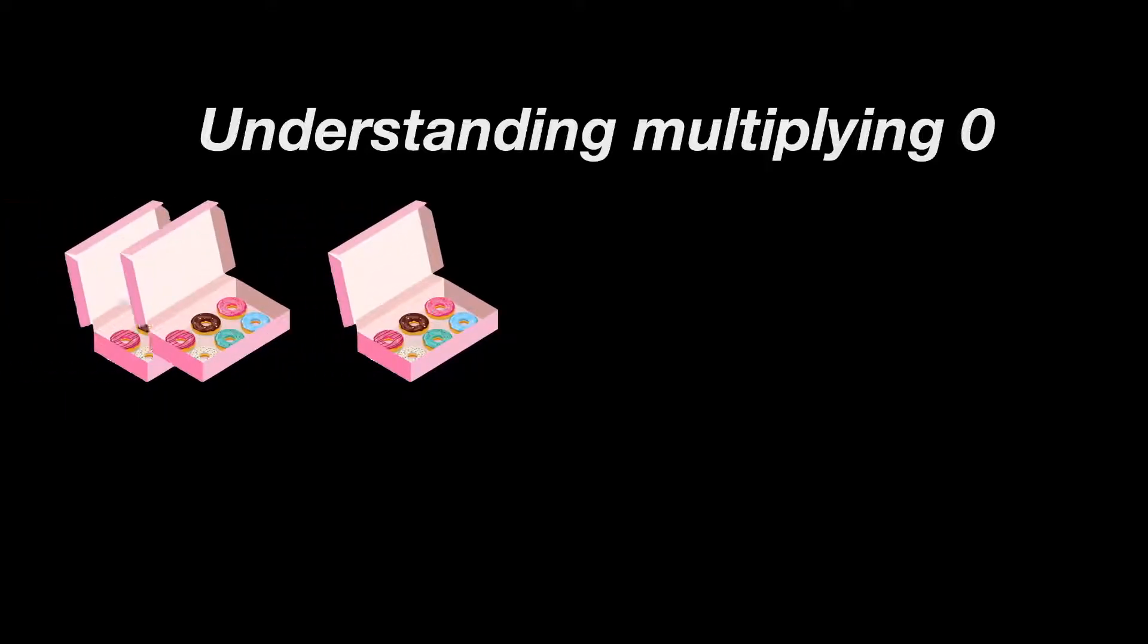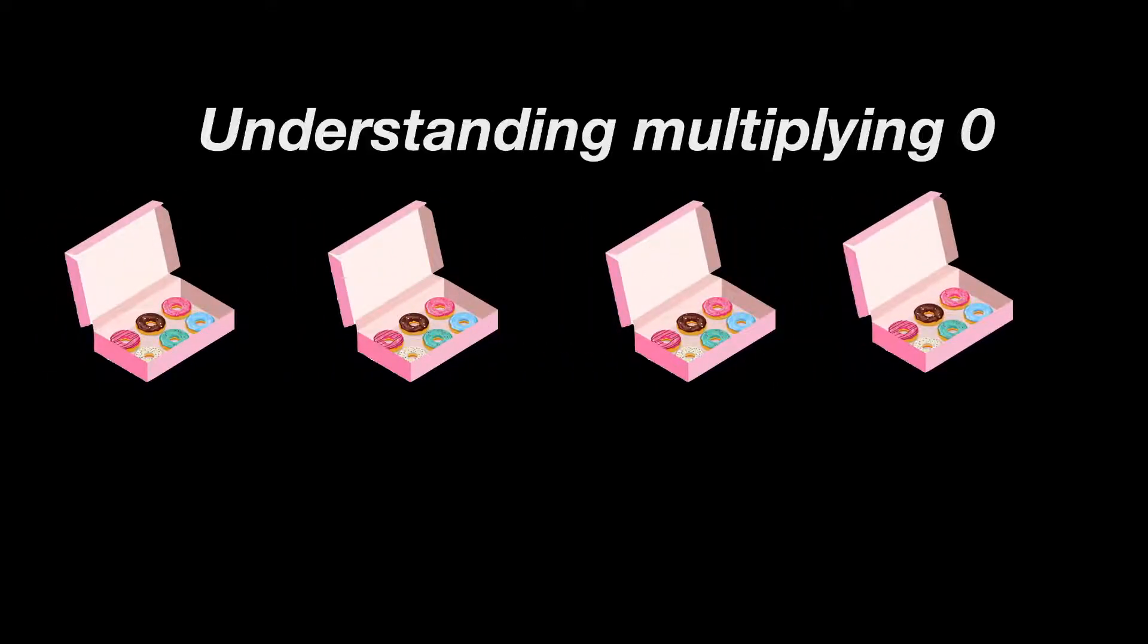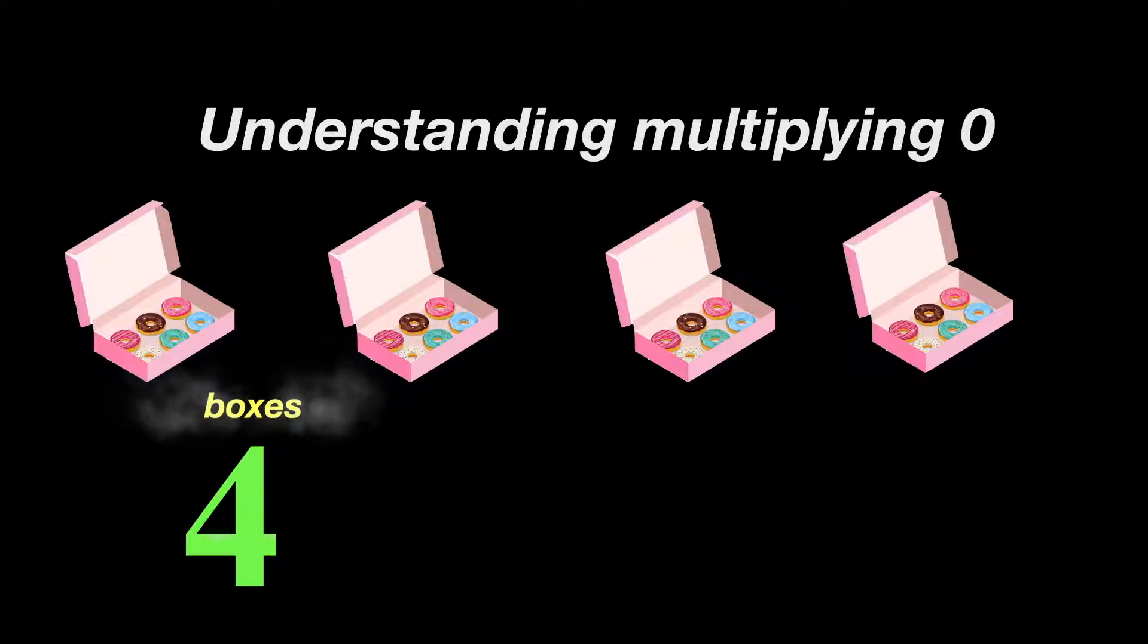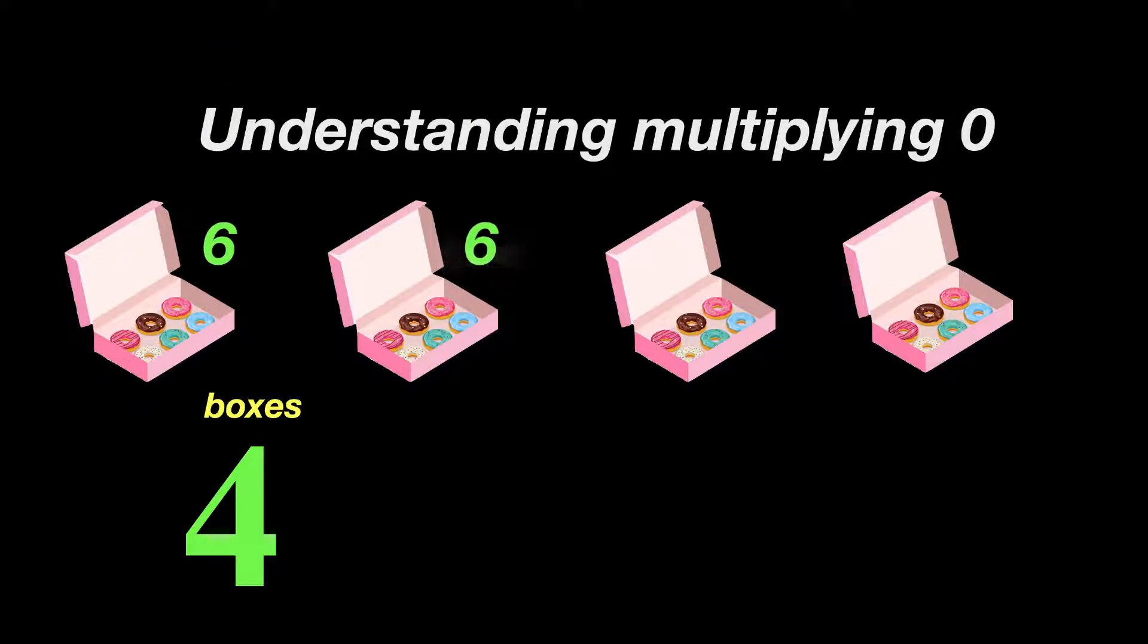Now understanding multiplying zeros is sometimes a little bit tricky, so let's look at an example. For example, let's say if you wanted to buy some donuts, and you go out and you buy four boxes of donuts. So you've got four boxes. Now how many donuts in this example are in each box? I'm counting six for each box.